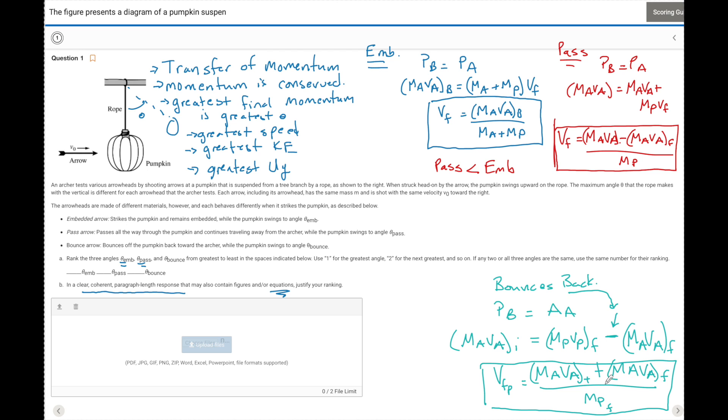And that makes sense. The arrow is going to go through the greatest change in momentum. And the momentum gained by the pumpkin has to be equal to the change in momentum of the arrow. So this right here is the greatest speed, greatest momentum. So that arrow is going to be the greatest. That is bounce back, number one.